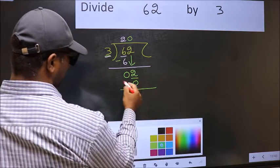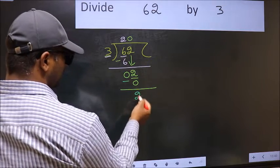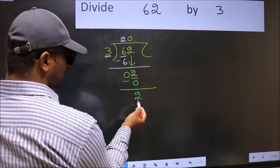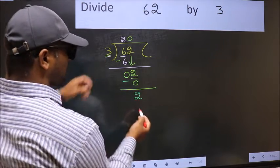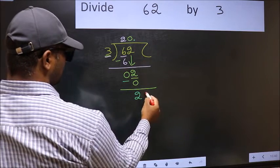Now you subtract. 2 minus 0 is 2. Over here, we did not bring any number down, and 2 is smaller than 3. So now you can put a dot and take 0.